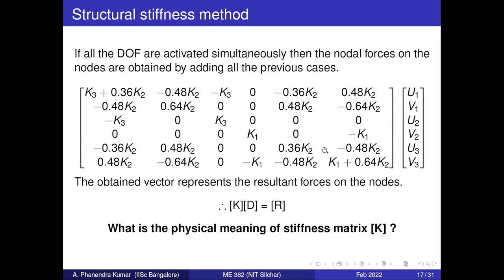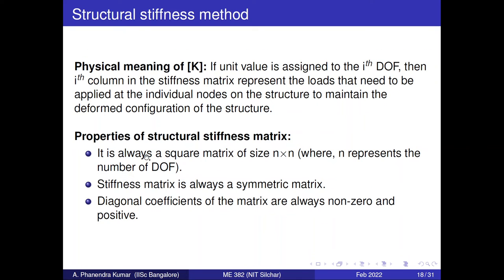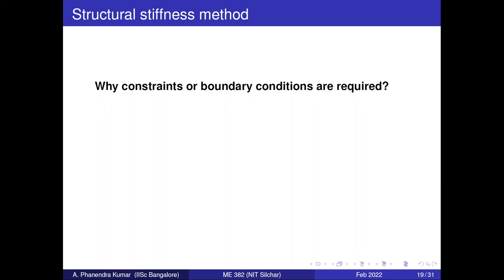The diagonals of the stiffness matrix should always be positive and nonzero. If you see a zero or negative diagonal value, that indicates the structure is unstable, or you have made a calculation mistake. You can use these three properties — square matrix, symmetric, positive diagonal — to check your calculations while solving for the stiffness matrix in exams.